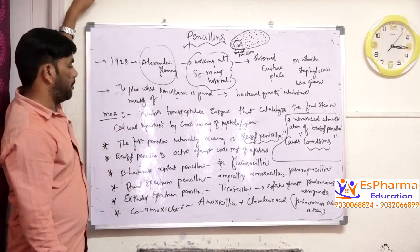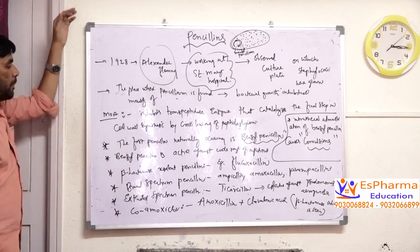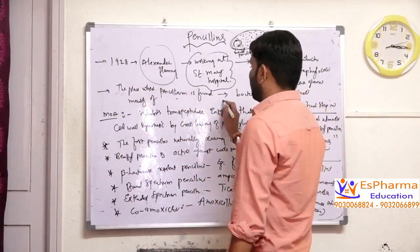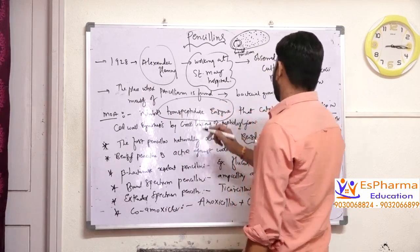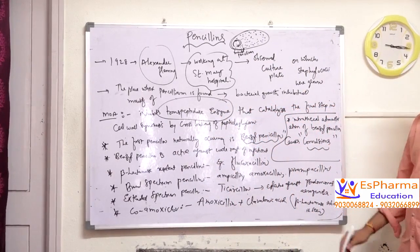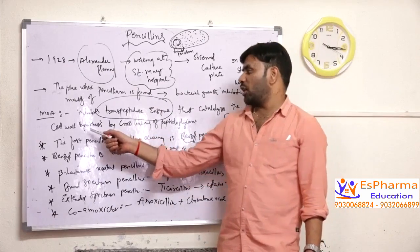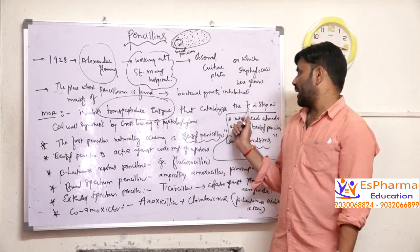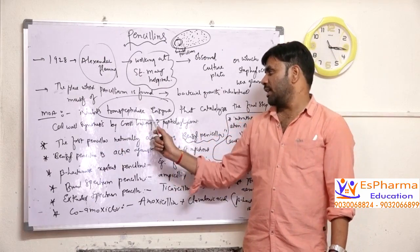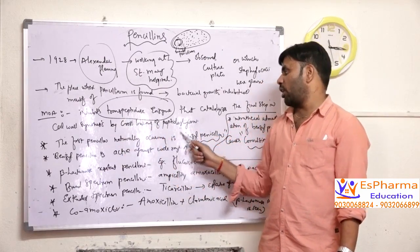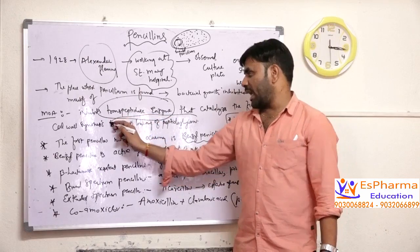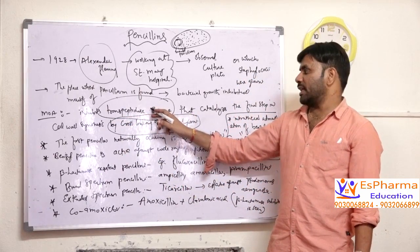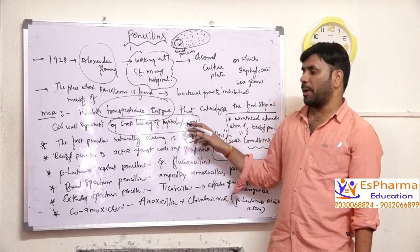This is the experiment conducted by him. When you look at penicillin, it inhibits one enzyme called transpeptidase. It acts by inhibiting the transpeptidase enzyme. This transpeptidase enzyme catalyzes the final step involved in cell wall synthesis and helps in the cross-linking of peptidoglycan.